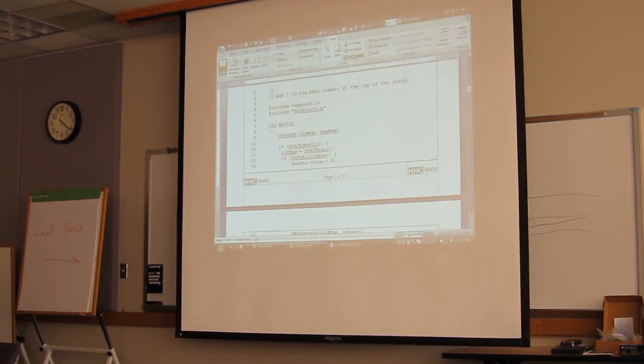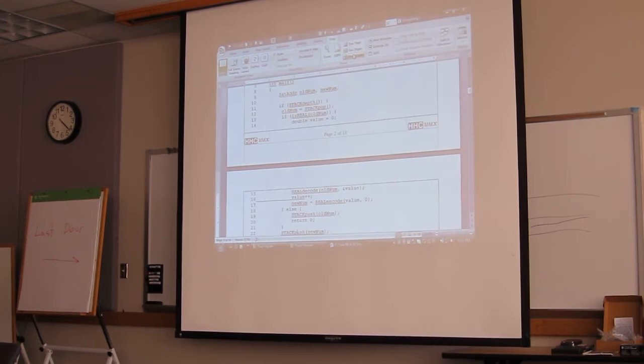All right, so at line 11, I'm saying if the stack depth is not zero, and I'll talk about the naming convention in a little bit. So if there's something on the stack, then at line 12, I'm going to pop that off. So I pop that off into, and I get the address of whatever was on the stack into old num. So my old num variable now points to whatever's on the stack.